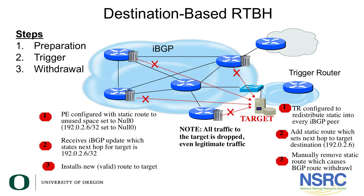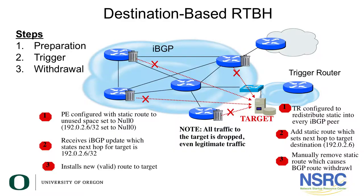With destination-based remotely triggered black hole filtering, it's really important to note that all traffic to the target is dropped, even legitimate traffic. While it did solve the problem of DDoS traffic being sent to the victim, the problem was that no legitimate traffic to the victim could get through.